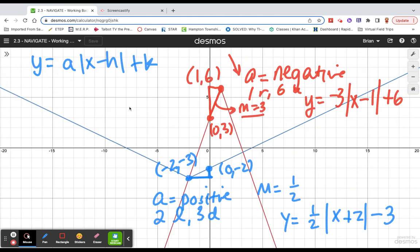Working backwards is a matter of determining those key characteristics. What direction is it facing? What are the slopes of the two half lines? And where has the vertex gone? If you can identify those three things, you should have no problem identifying and creating your own absolute value function from a graph.